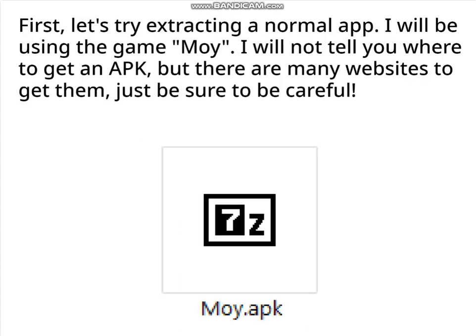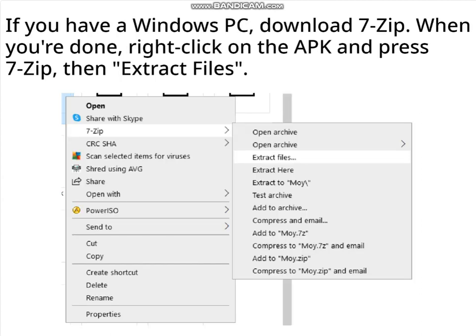First, let's try extracting a normal app. I will be using the game Moi. I will not tell you where to get an APK, but there are many websites to get them — just be sure to be careful. If you have a Windows PC, download 7-Zip. When you're done, right-click on the APK and press 7-Zip, then extract files.